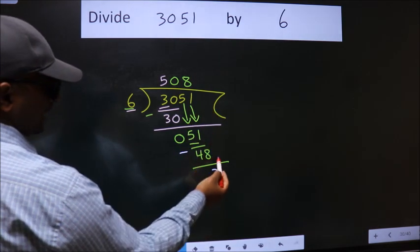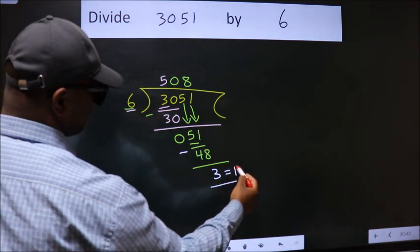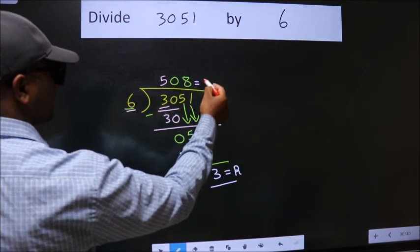No more numbers to bring down. So we stop here. This is our remainder. This is our quotient.